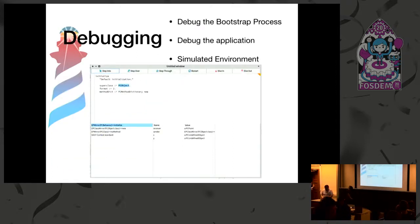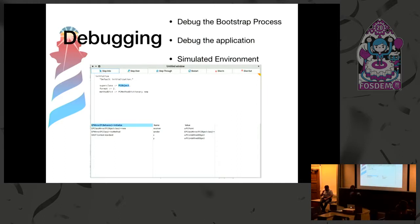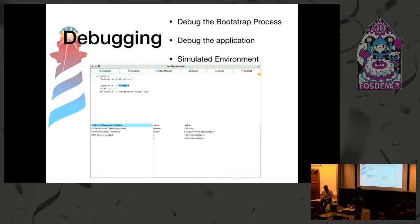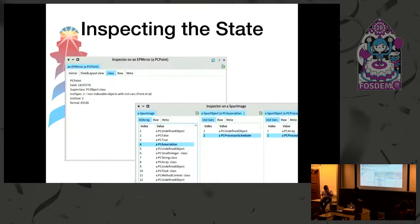The next thing we are providing is debugging support. We provide a custom debugger which allows us to debug the bootstrap process but also the application that will run inside the generated kernel. This debugger allows us to debug the application before deploying by providing a simulated environment in which the application will run. It also provides low-level and high-level tools for dealing with low-level features regarding the interaction that the kernel will have with the virtual machine.